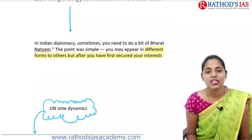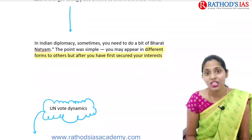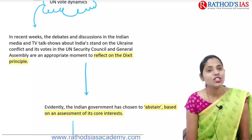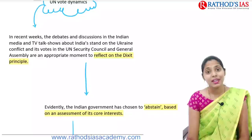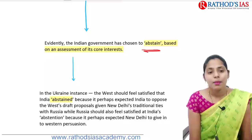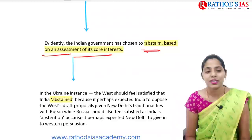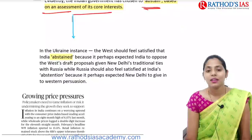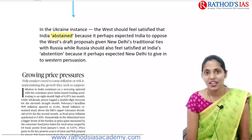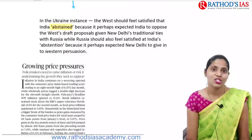Indian diplomacy is changing with time and adapting as needed. Regarding the recent Russia-Ukraine crisis, a United Nations resolution was passed but India abstained from voting. The Indian government chose to abstain based on assessment of its core interests. Western countries noted New Delhi's traditional ties with Russia as the reason it did not vote against Russia.